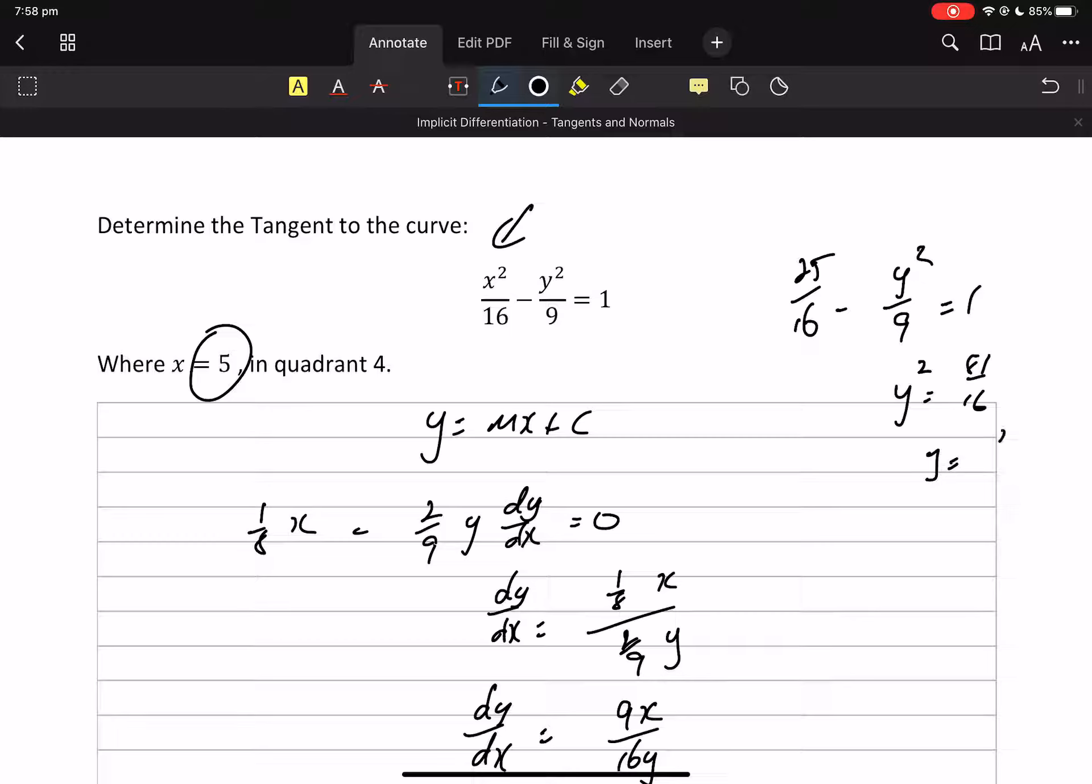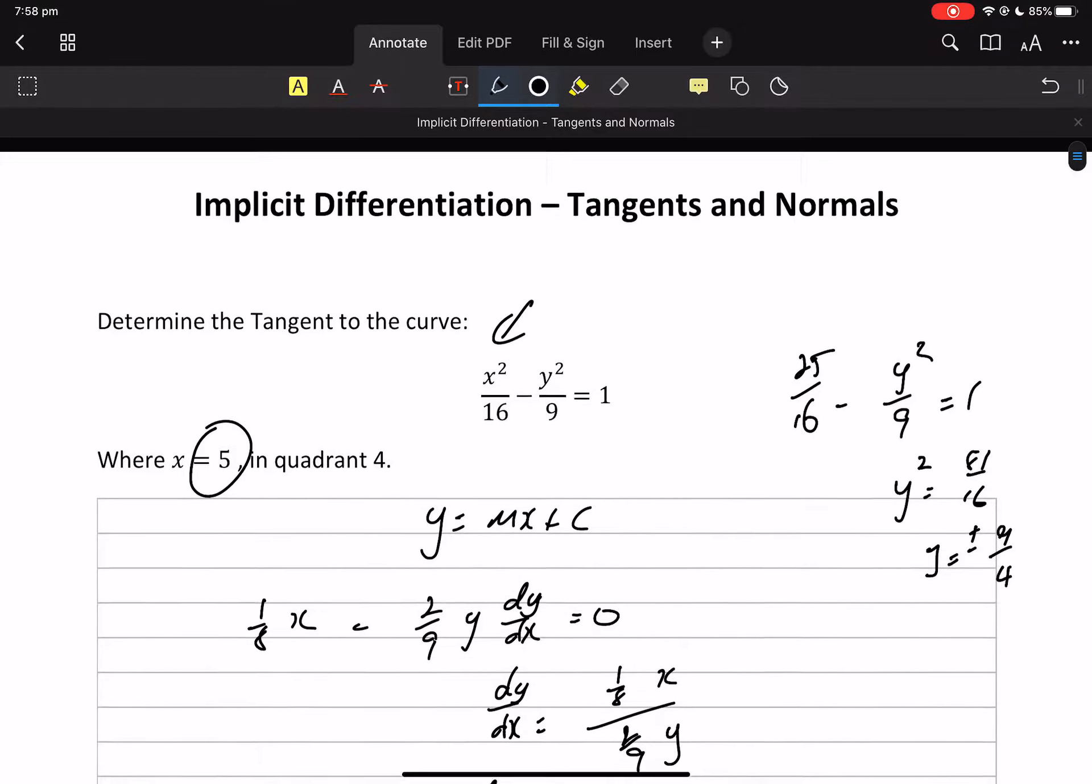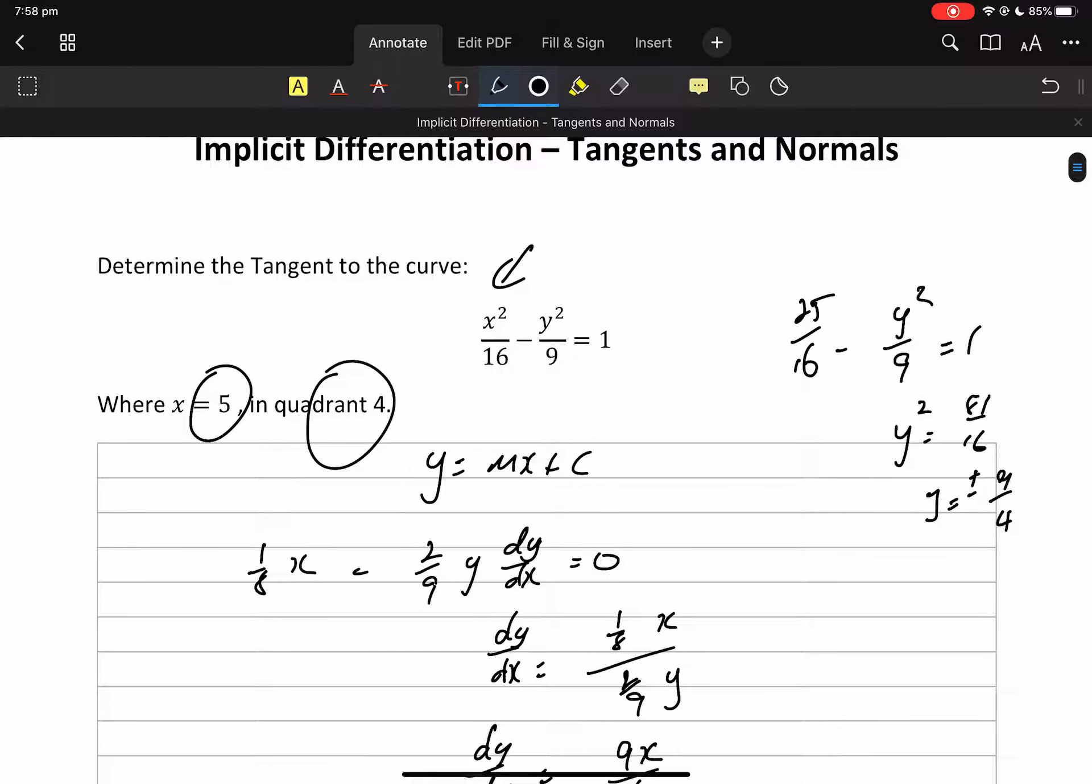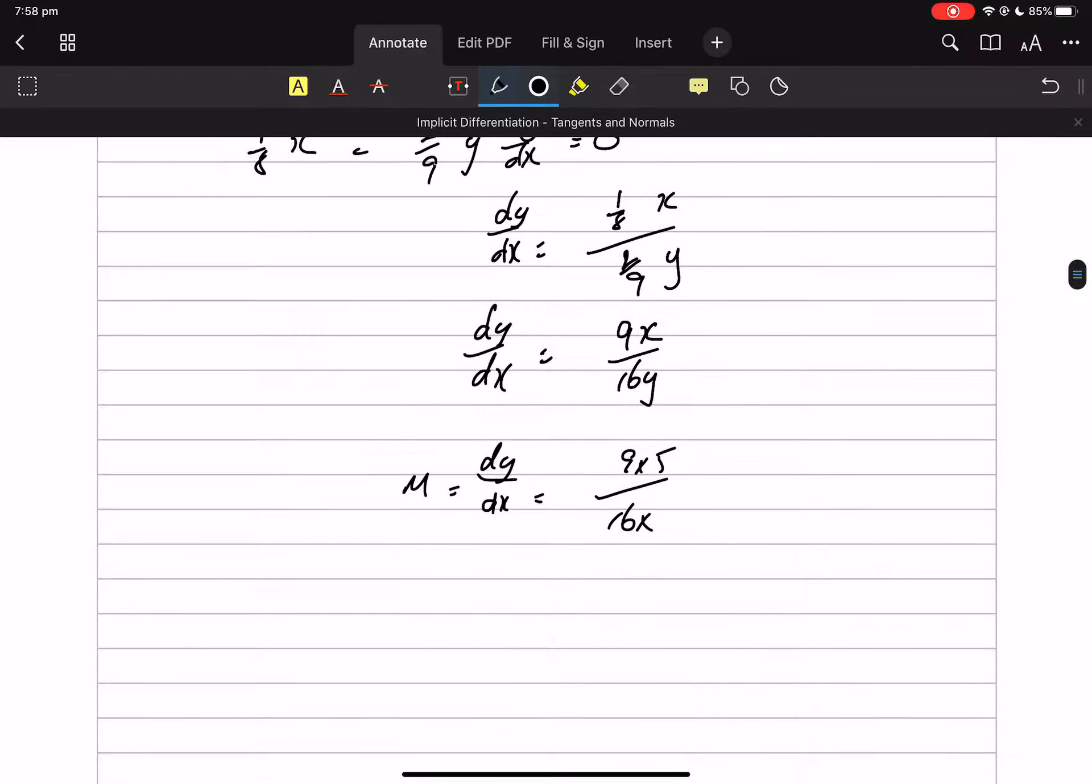So y will be 9 on 4 plus or minus. But remember we wanted it in quadrant 4, so it'll be this minus 9 on 4. So there's our y.